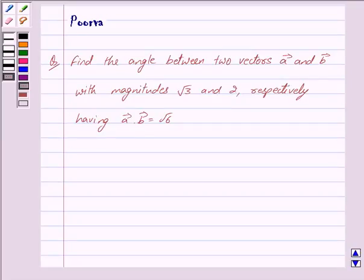Good morning friends, I am Poorva, and today we will discuss the following question: find the angle between two vectors, vector a and vector b, with magnitudes root 3 and 2 respectively, having vector a dot vector b equals root 6.